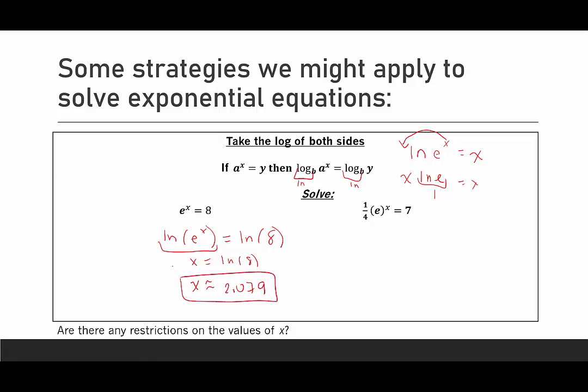In this next example, I see that we have that base e not by itself because it's being multiplied by one-fourth. What I'm going to do is multiply both sides by the reciprocal of one-fourth to clear out that fraction, which would be 4. Those cancel, and I'm left with e^x = 28.